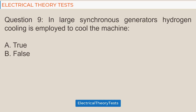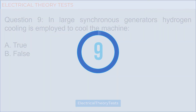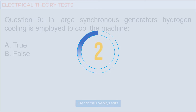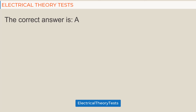Question 9: In large synchronous generators, hydrogen cooling is employed to cool the machine — a) true, b) false. The correct answer is a) true.